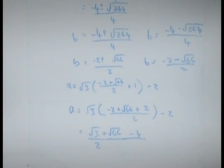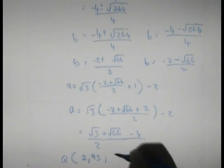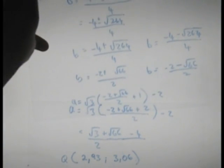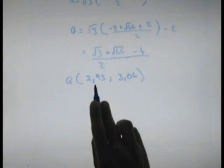Now all I'm going to do is I'm just going to simplify it. That means that my coordinates of Q are an a value of root 3 plus root 66 minus 4 divided by 2 equals 2.93. And my y coordinate, or my b value, is given by negative 2 plus root 66 divided by 2, which is equal to 3.06. And I did that using the calculator.